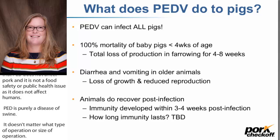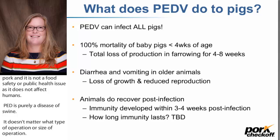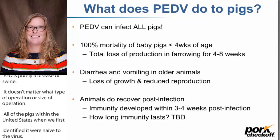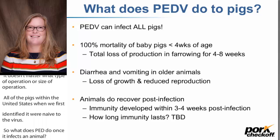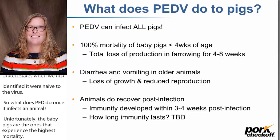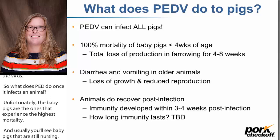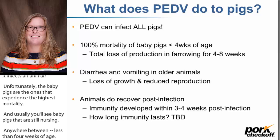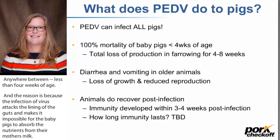Once PED infects an animal, unfortunately baby pigs experience the highest mortality — typically those still nursing, under four weeks of age. The virus attacks the lining of the gut, making it impossible for baby pigs to absorb nutrients from their mother's milk. Farms have reported a range of production loss anywhere between four to eight weeks, and sometimes even longer, as the virus works through the system.